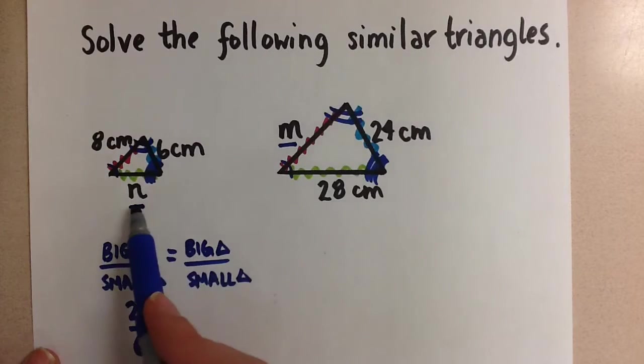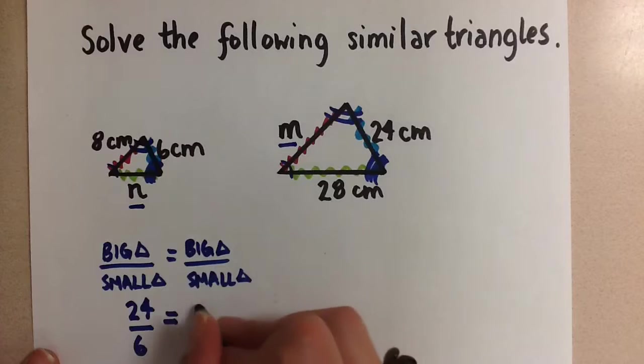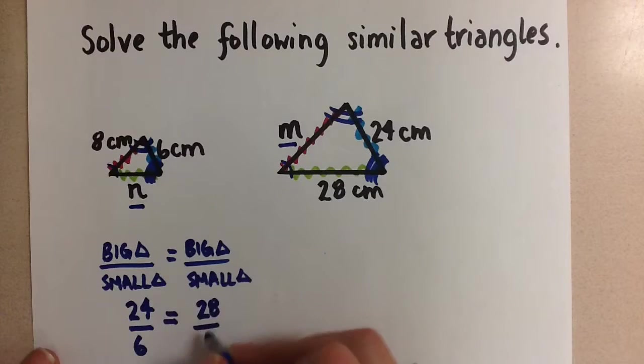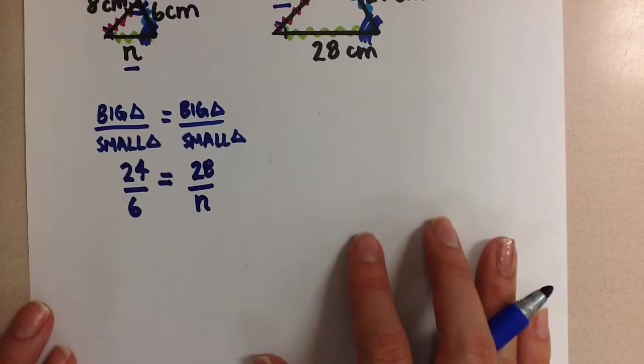and if we want to solve for the n, we need to make sure we choose the pair of sides that has the variable n in it. So we're going to do 28 over n, like this. Now we're going to continue to solve this proportion.